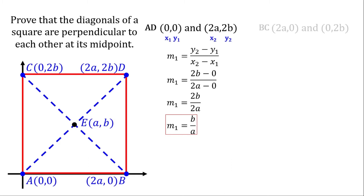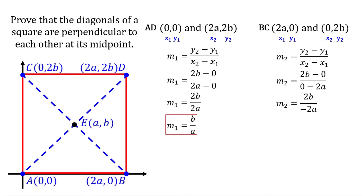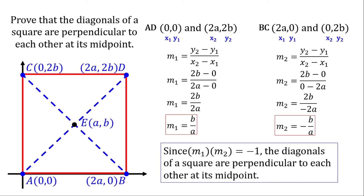Now let's get the slope of segment BC, using points 2A,0 and 0,2B. Assign point 1 and point 2 and use the slope formula for line 2: 2B minus 0 over 0 minus 2A. Simplifying: 2B over negative 2A, which gives us negative B over A. Since the product of slope 1 and slope 2 equals negative 1, the diagonals of the square are perpendicular to each other at its midpoint.